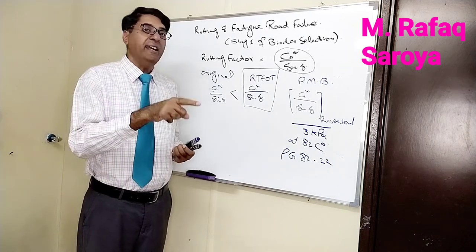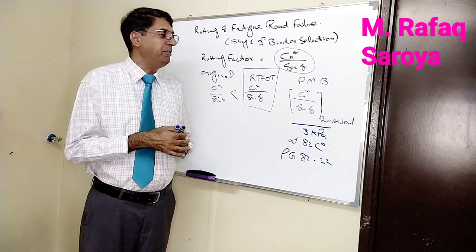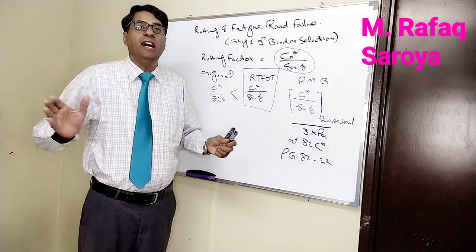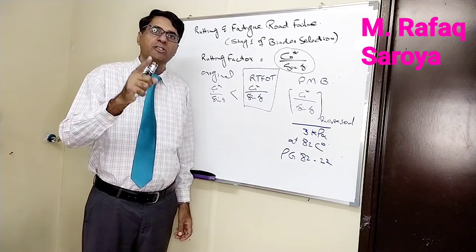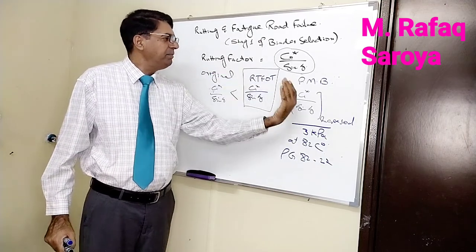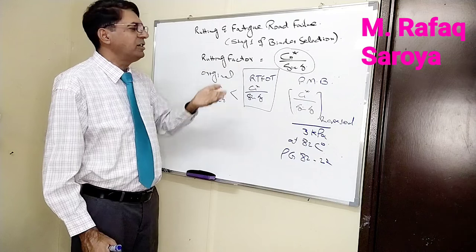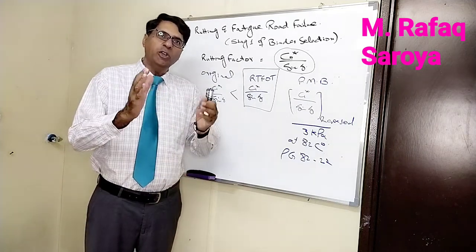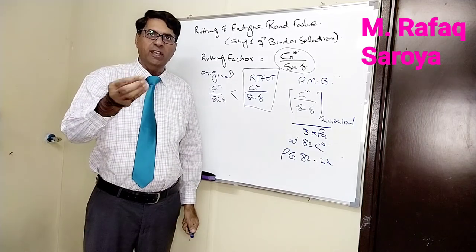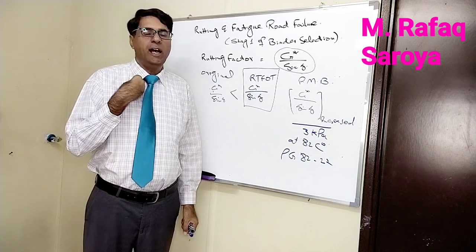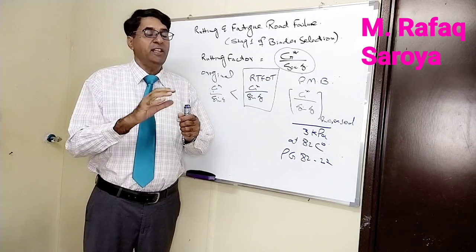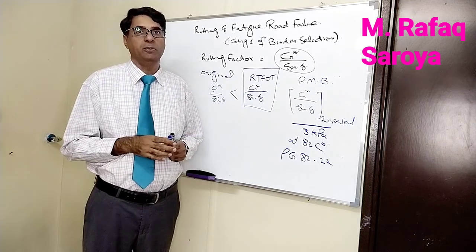This shows that whenever we have polymer modified binder, if we check its rutting factor and its value is exceeding all the values, it means polymer modified is also going to show good property against rutting. This brief introduction about the rutting factor has been given to you. Although it is very boring and difficult to understand, if you have any query or doubt, please let me know. I will try to explain it, because understanding is more important than just going through it in a superficial way. Thank you for seeing this video.